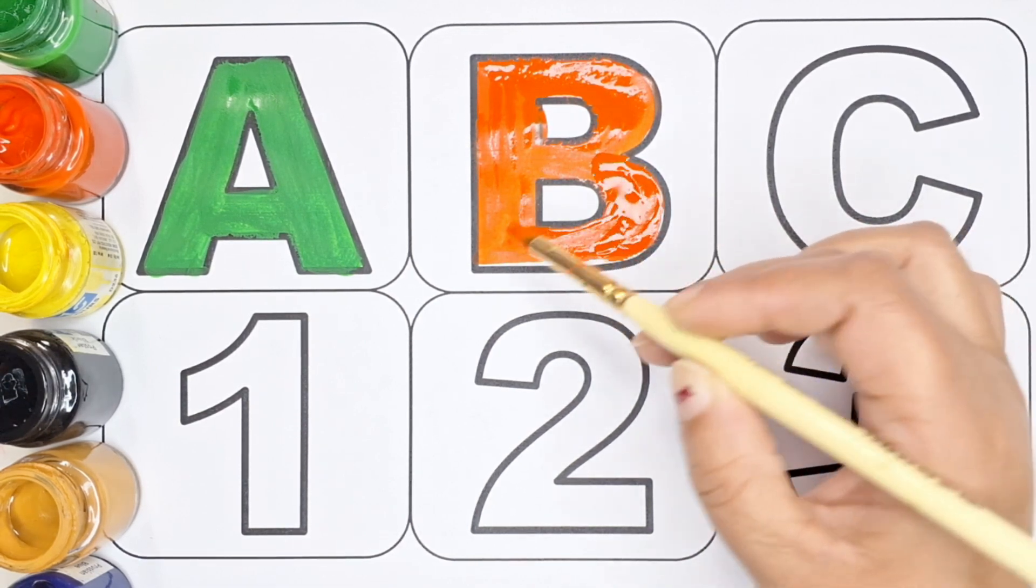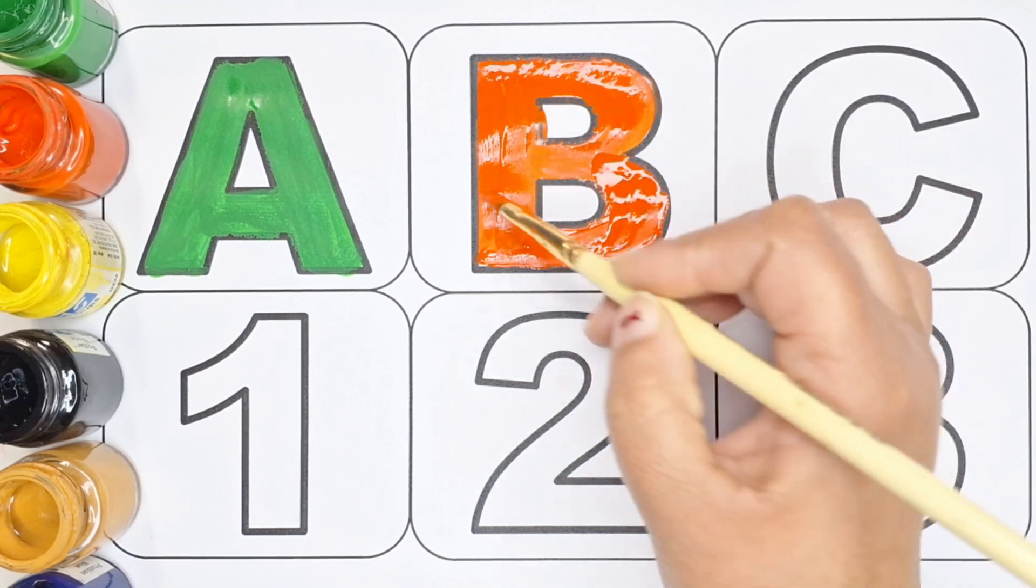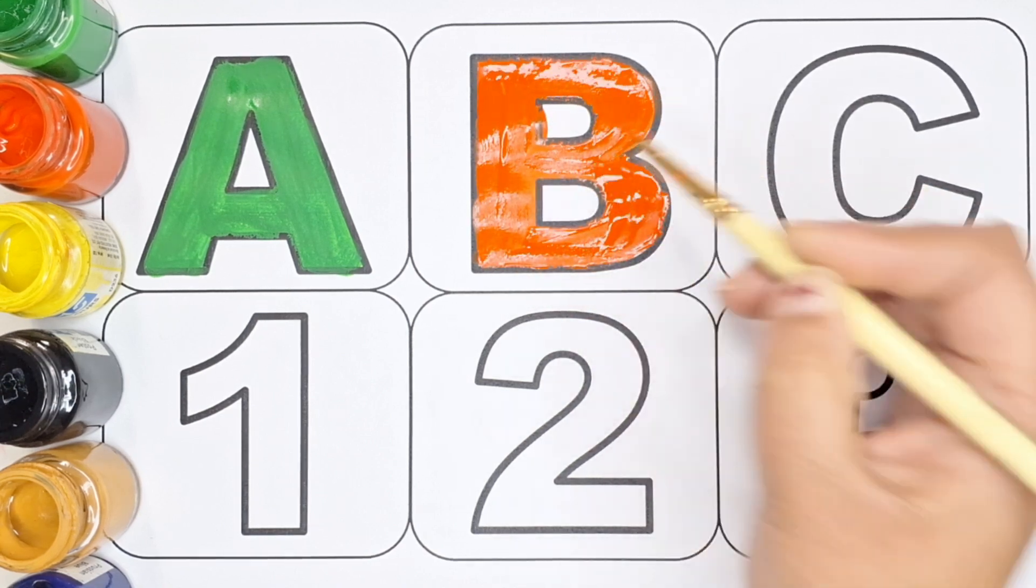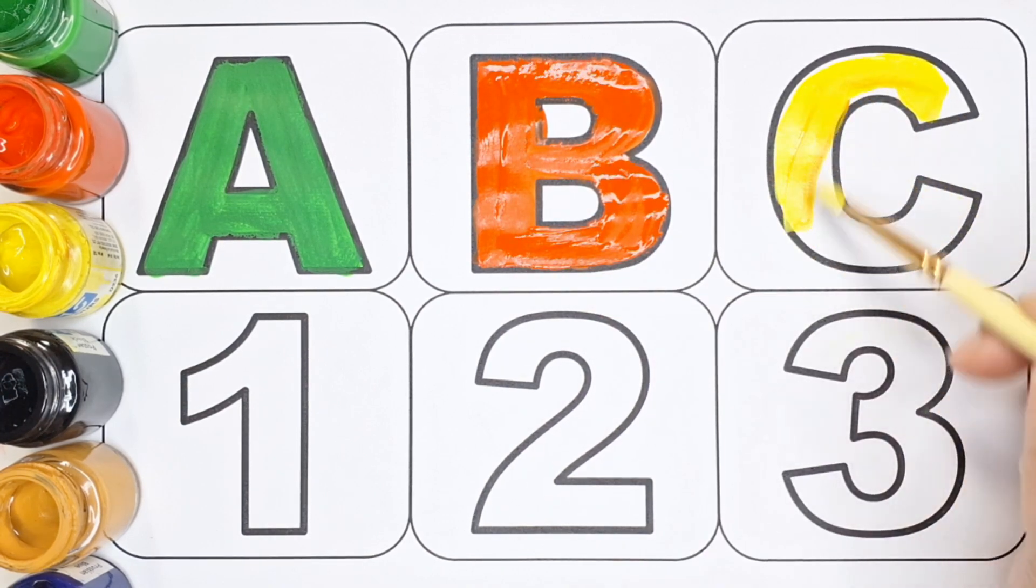A for ambulance or A for aeroplane. Yellow color. B for bicycle or B for bus. Yellow color.